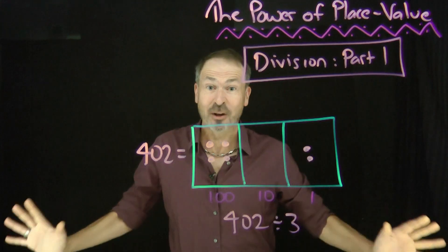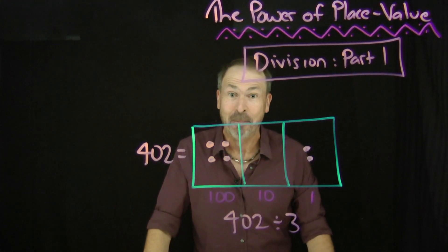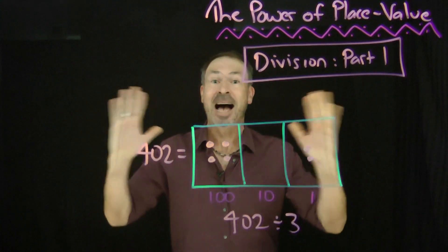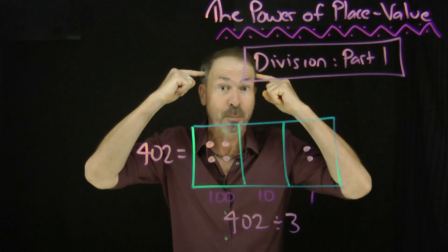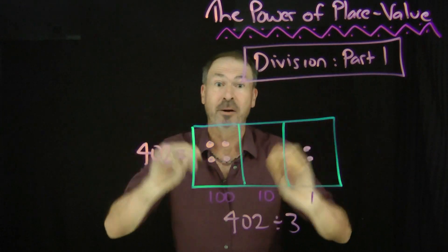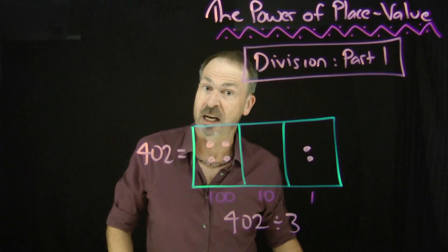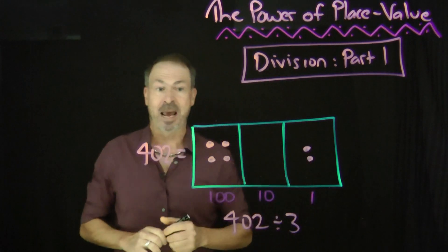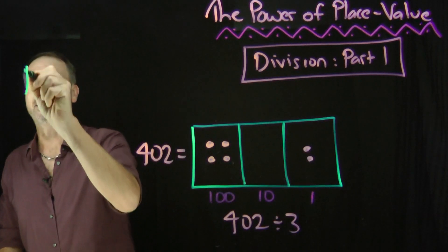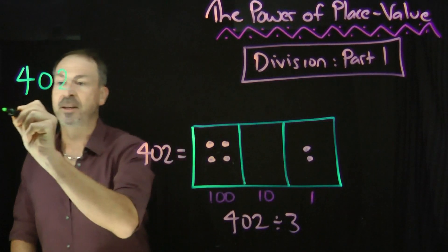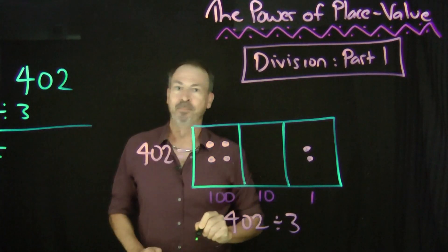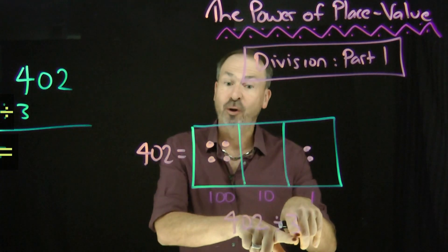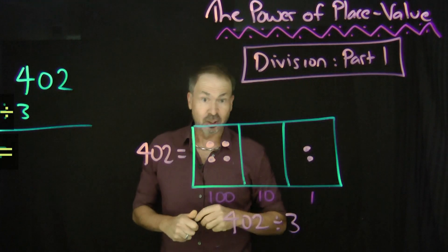People say to me: James, this dots and boxes approach is great, I really literally see what's going on. But do I really have to draw a dots and boxes picture each and every time I want to do a division problem? And the answer is no. If you do these pictures for a while, they start to stick in your brain — you start drawing the pictures in your mind rather than on the page. For example, let's do 402 divided by 3. What got tripled to give this picture here? Let me show you what I really do on the page with pencil and paper.